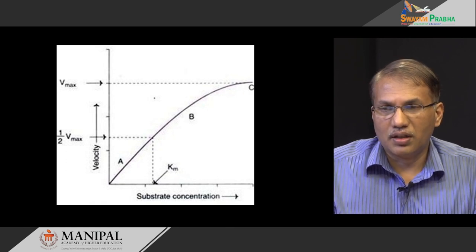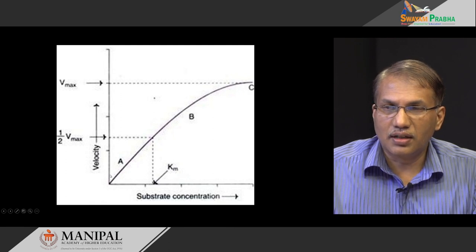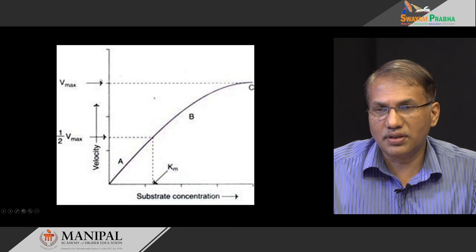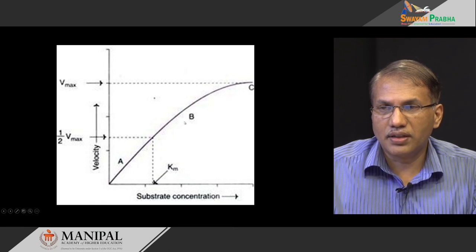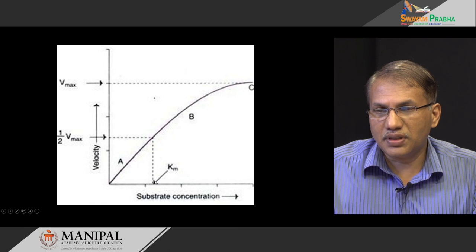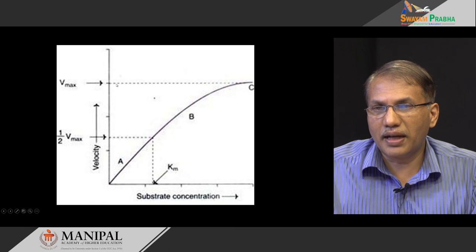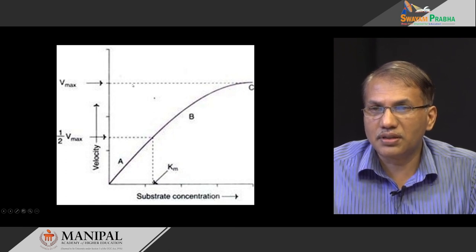Let us first see substrate concentration. We have a graph here where the x-axis has substrate concentration and the y-axis has velocity of enzyme action. This graph has three phases: phase A, phase B, and phase C. In between, we have a dotted line in the middle representing the substrate concentration at half-maximal velocity, and the uppermost dotted line represents the maximum velocity — the point where the enzyme reaches maximum activity.